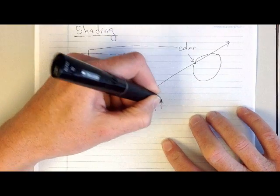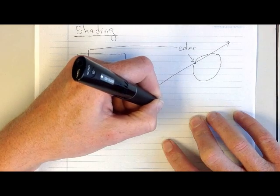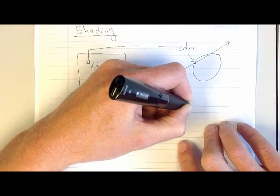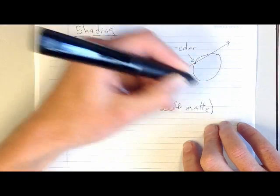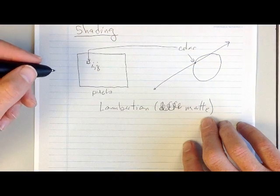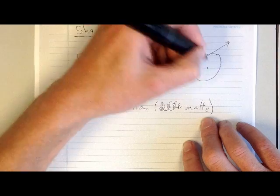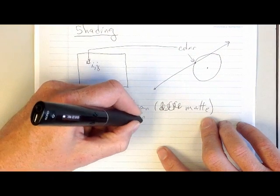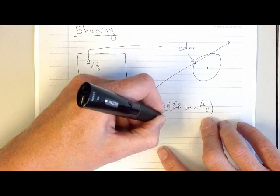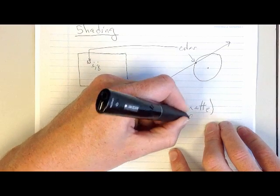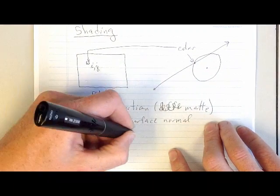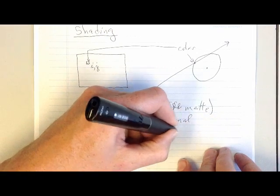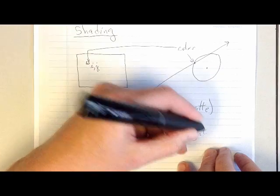The way we're going to do this is by using Lambertian, or diffuse matte shading. We'll say matte because that's what it is — our spheres don't look shiny, they look matte or diffuse. So to compute the color at that point, we need to know a couple of things to do Lambertian shading.